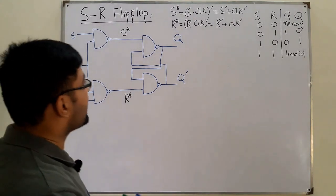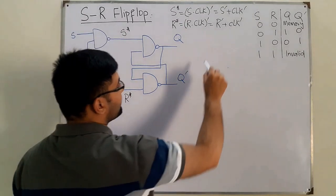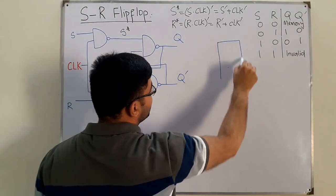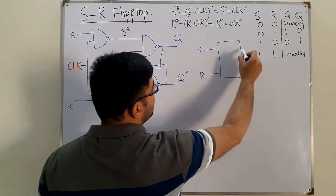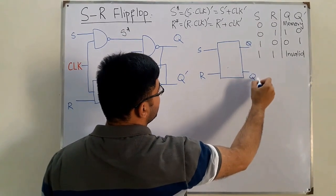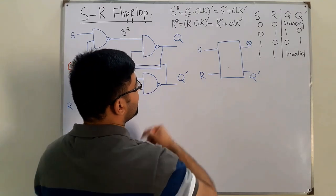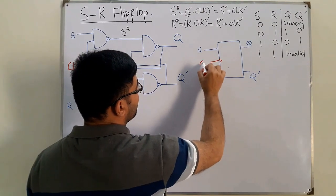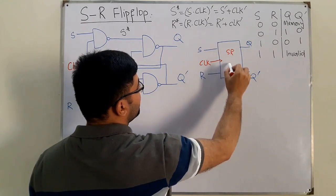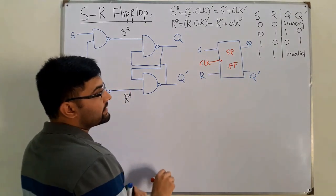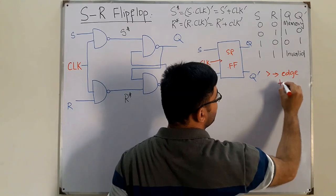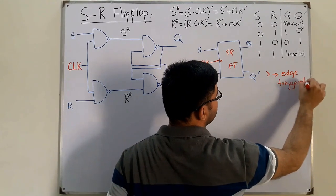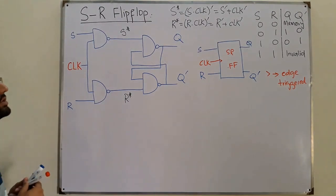Now let's see the block diagram representation of this SR flip-flop. You draw a block like this with two inputs S and R, two outputs Q and Q complement, and a control signal — the clock. This arrow on the clock input indicates that this is an edge-triggered flip-flop. That's the block diagram of the SR flip-flop.